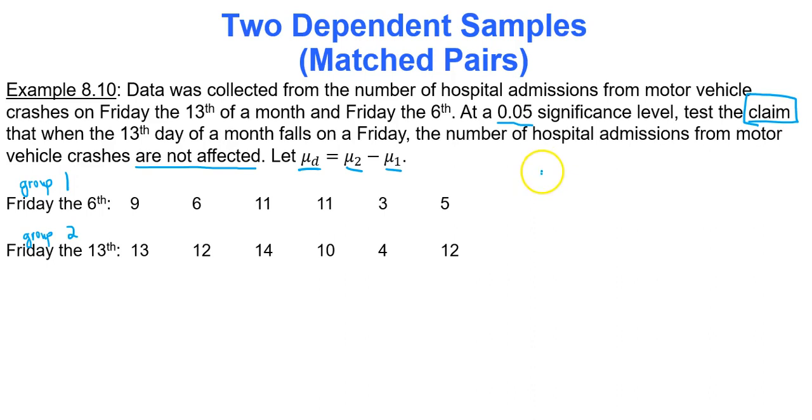So your hypotheses will be what? Well the claim is that number of hospital admissions are not affected. If that's the case, if the number of hospital admissions are not affected, that means the difference is going to be 0. A difference of 0 means no effect. And that's actually the null hypothesis. And then the alternative will be the exact opposite, not equal to 0.